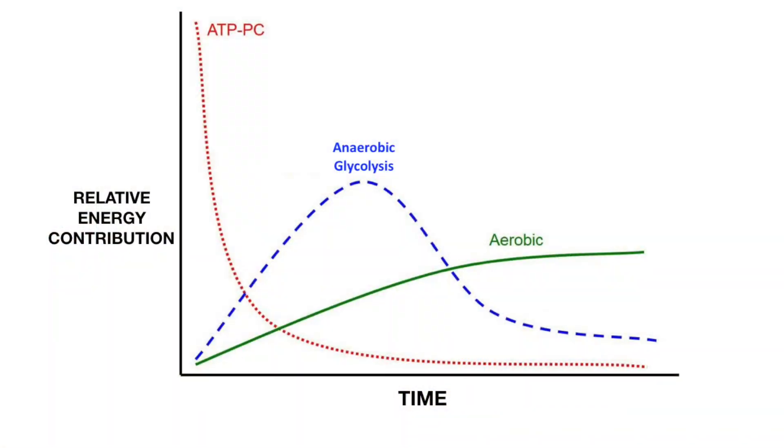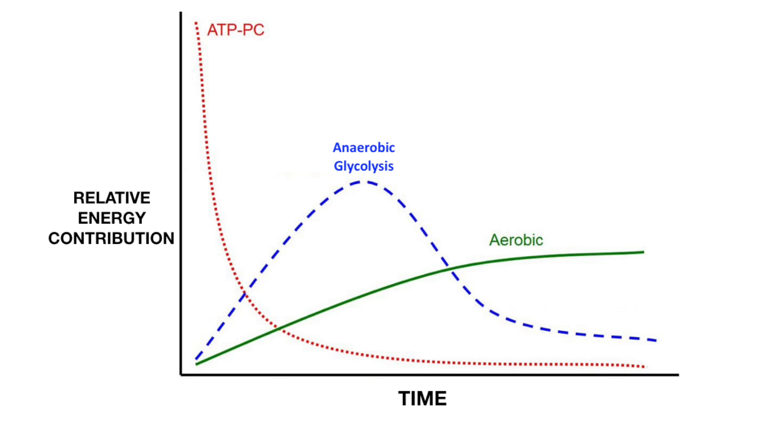If you can understand the basics of energy system interplay and overall energy production, you're going to have a really easy time identifying how you should be training and how you should be manipulating variables within your sport. So what I'm going to throw up on the screen here is a very simple graph of what we call a maximal exercise example.